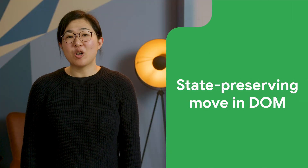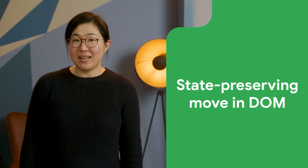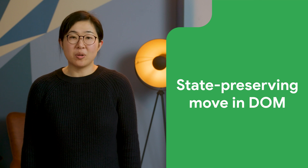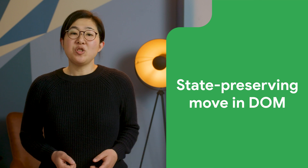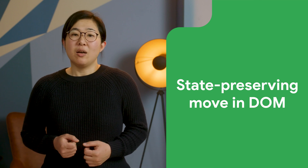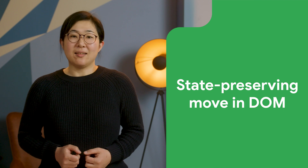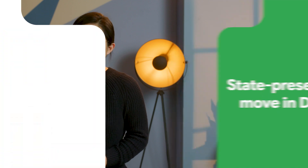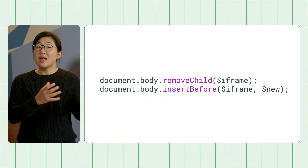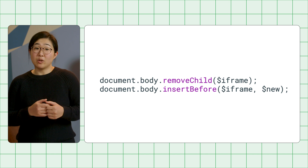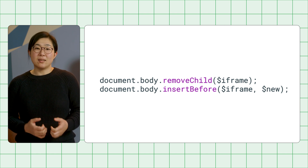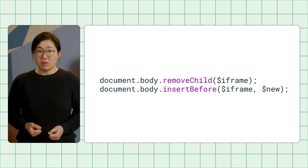Added in Chrome 133, a DOM primitive Node.prototype.moveBefore lets you move elements around the DOM tree without resetting the element state. When you remove, then reinsert an element to move a DOM element, it will reset the state of that element.